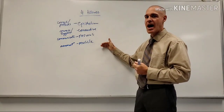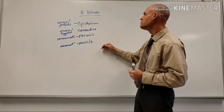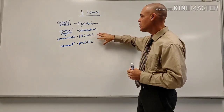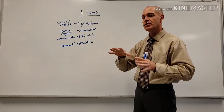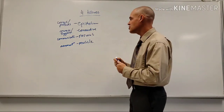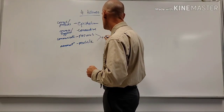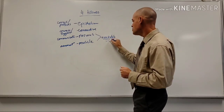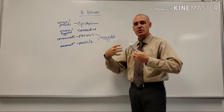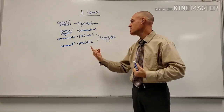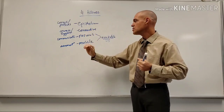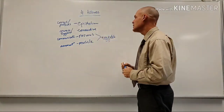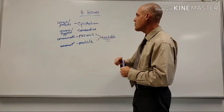Looking at some differences: nerve and muscle are very distinct and very specialized. We actually call nerve and muscle tissue excitable tissues, because we stimulate nerve and stimulate muscle and they do something - nervous tissue sends signals and muscles contract. So these are both excitable tissues.